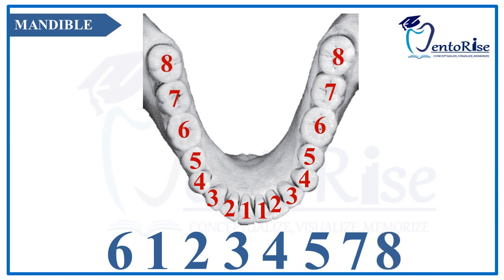Therefore, the mandibular eruption sequence will go like 6, 1, 2, 3, 4, 5, 7, 8. This is very simple to remember. However, there are changes in the maxilla.